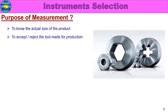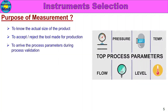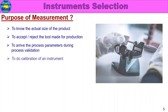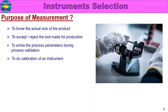A measurement tool made for production — one small tool to accept or reject. Measurement is used to arrive at the process parameters during process validation and production. Various process parameters are checked; the output part dimension is confirmed within range. Process parameters are set during process validation. Measurement is used to do calibration of an instrument.